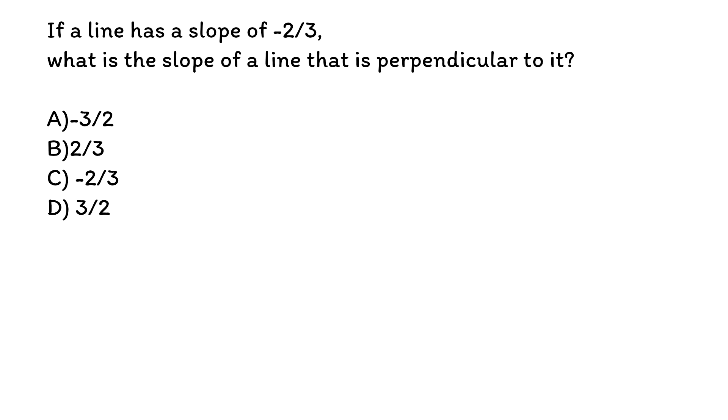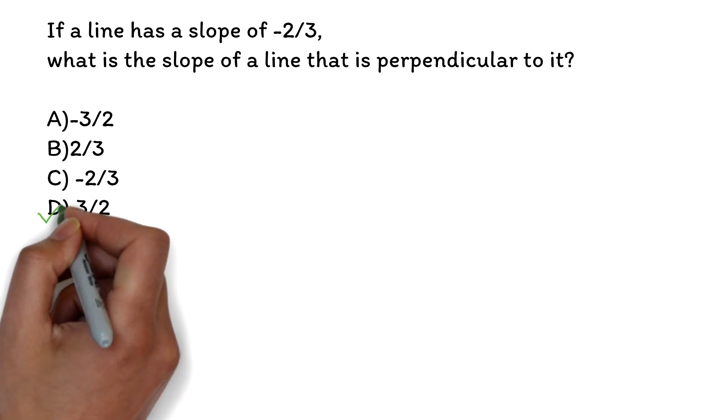If a line has a slope of negative 2 over 3, what is the slope of a line that is perpendicular to it? A. Negative 3 over 2, B. 2 over 3, C. Negative 2 over 3, D. 3 over 2. The correct answer is D, 3 over 2.